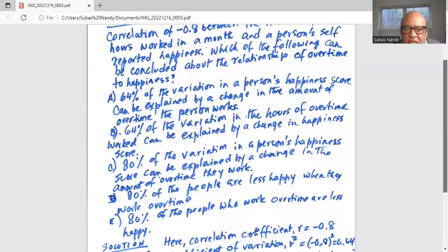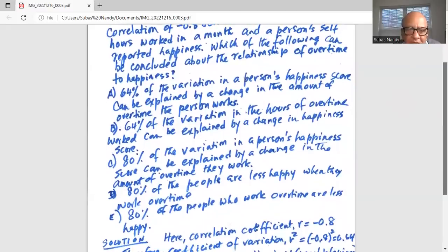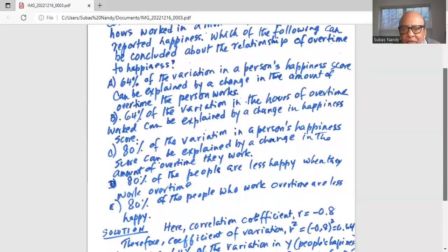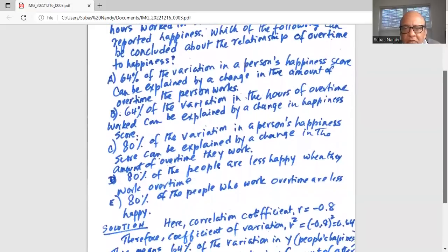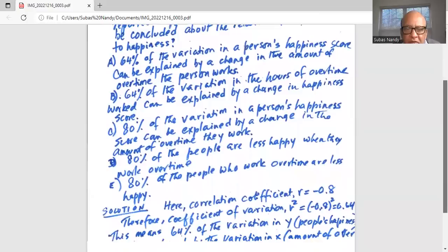Alternative D, 80% of the people are less happy when they work overtime. And alternative E, 80% of the people who work overtime are less happy. Solution.